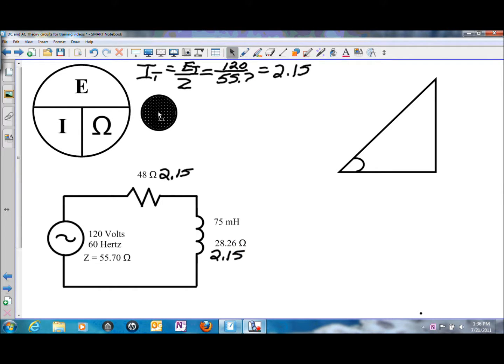So that solves for the total current, and what we have left to do is the voltage drop. The voltage drops on the individual components is just applying Ohm's law at two different places. So we need to solve for E at the resistor, or the voltage drop on the resistor, and E at the inductor.